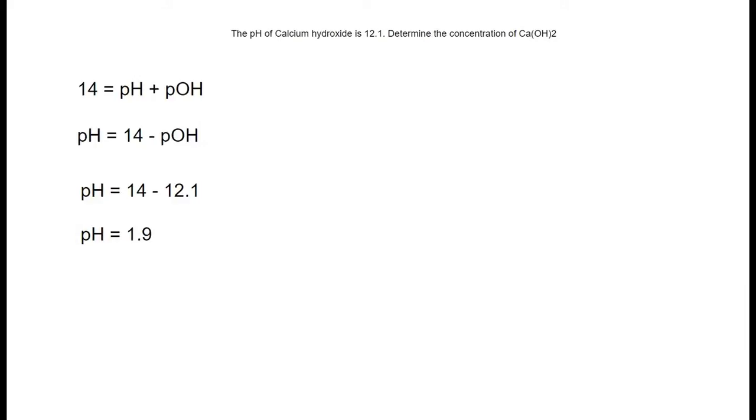After finding the pH, we must use another formula to get the concentration, which is concentration equals 10 to the power of negative pH. Then, we must plug in 1.9 into the part of the equation where it says pH.